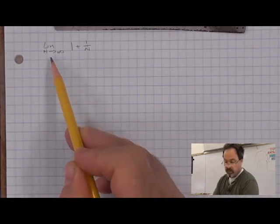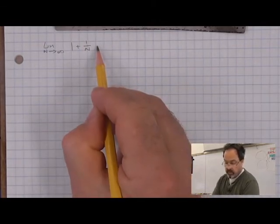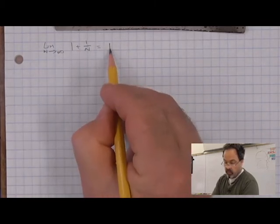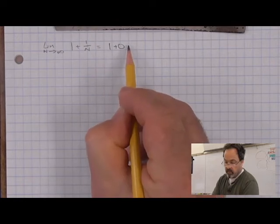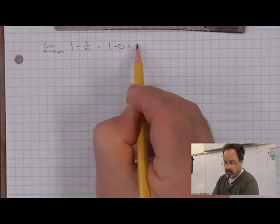This limit, as n goes to infinity, is the limit of 1 is 1, and the limit of 1 over n is 0. So this becomes 1.